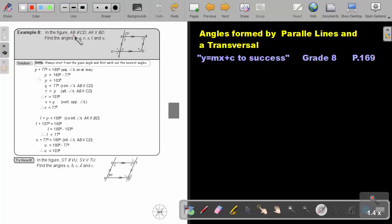In the figure, AB is parallel to CD. AK is parallel to BD.